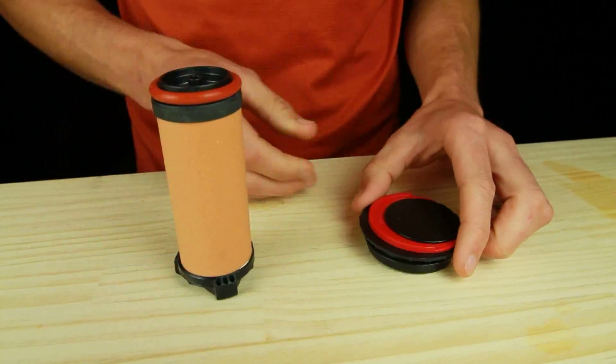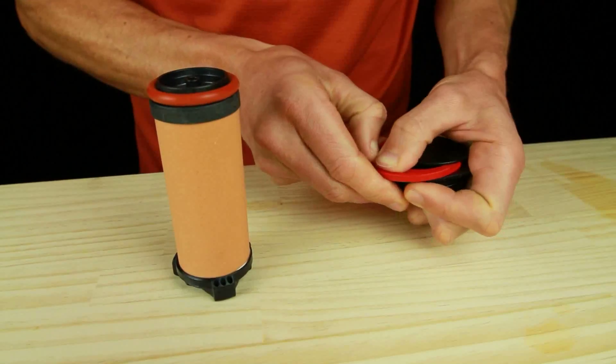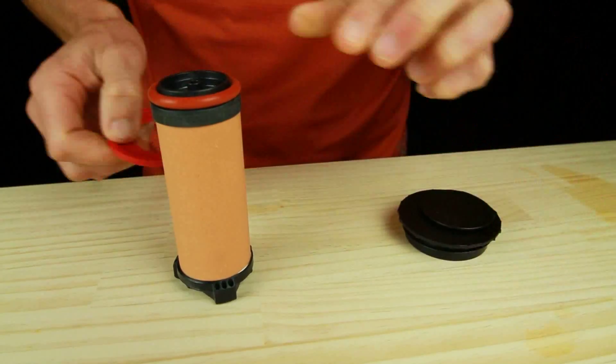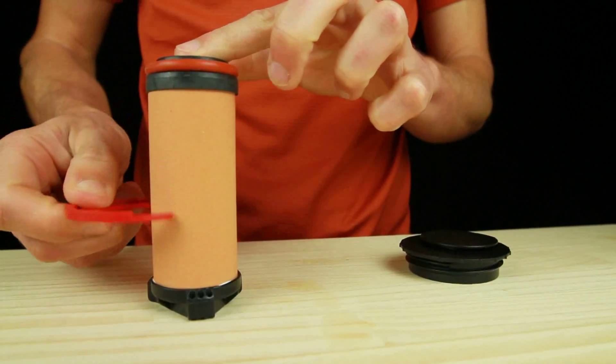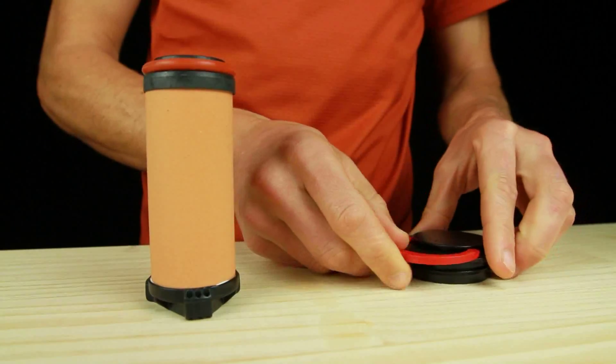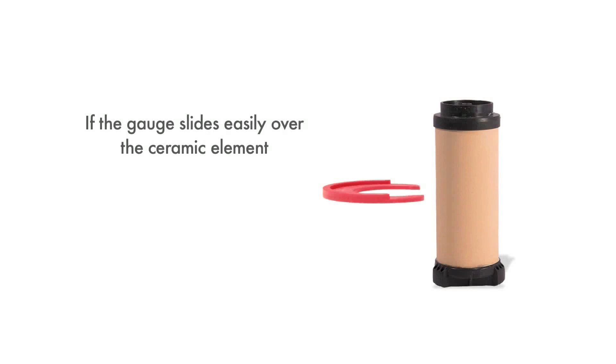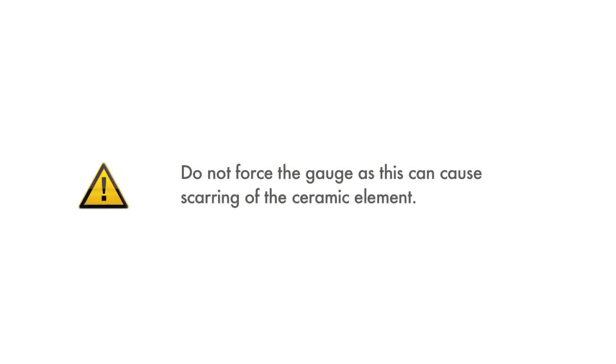You should measure the ceramic element every time you finish cleaning it. Remove the gauge from the clean side cover and test whether it can fit across the ceramic element. If the gauge slides easily across the ceramic element, then it's worn out and needs to be replaced. Do not force the gauge, as this can cause scarring of the ceramic element.